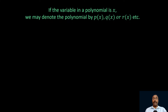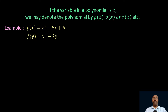If the variable in a polynomial is x, we may denote the polynomial by p(x), q(x), r(x), etc. For example, p(x) = x square minus 5x plus 6 is a polynomial in variable x; f(y) = y cube minus 2y is in variable y; q(z) = z plus 2 is in variable z. In the next class, we shall solve the problems in exercise 2.1. Until then, see you. Bye.